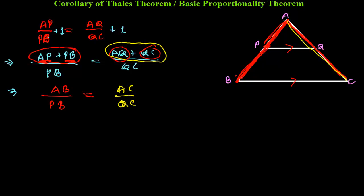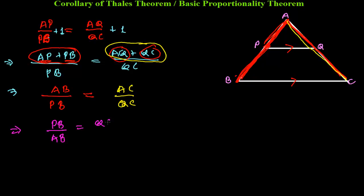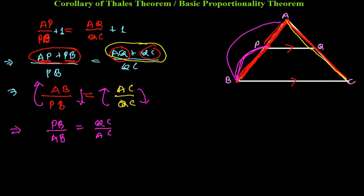Initially we said AP/PB = AQ/QC, but now we can say one more thing: AB/PB = AC/QC. You can also invert this to write PB/AB = QC/AC — one part over the whole part is the same for both sides.